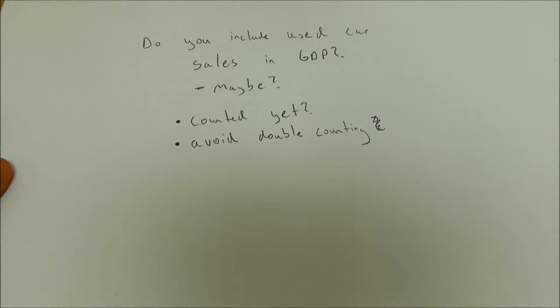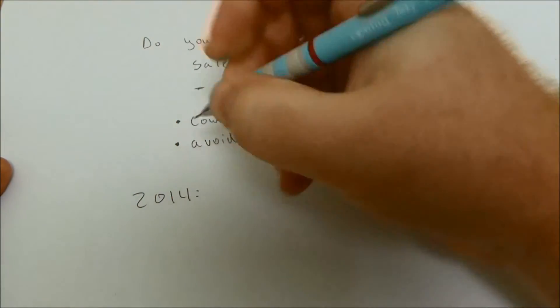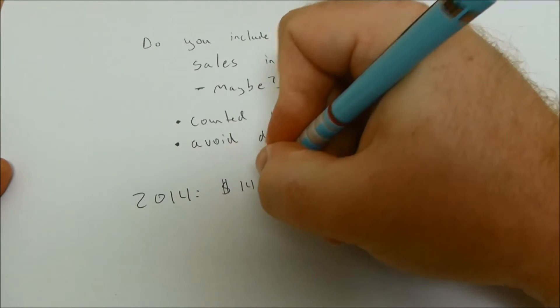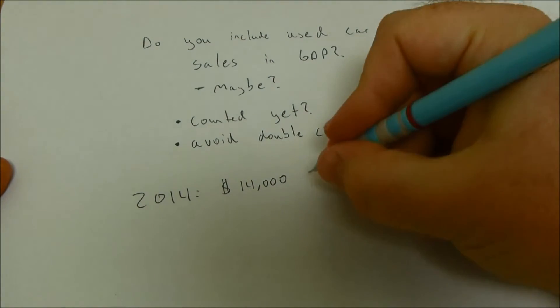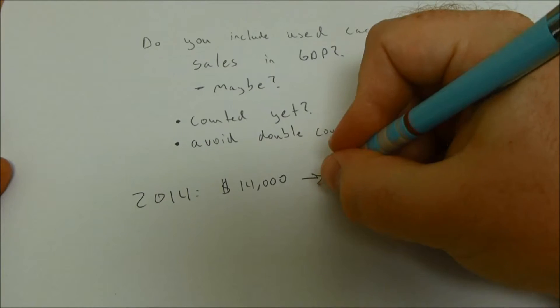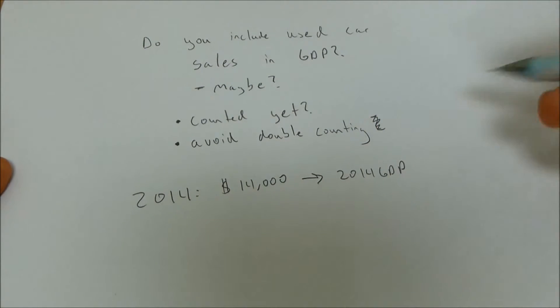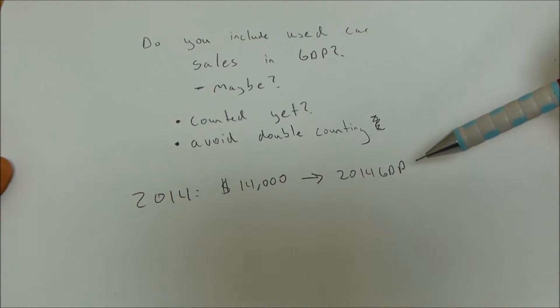Let's do an example starting with a new car. Say a new car is sold in 2014 for $14,000. That new car sale will be included in 2014 GDP — it was produced in 2014 and sold, so it's included in 2014.